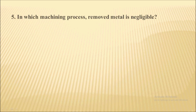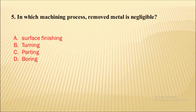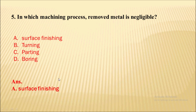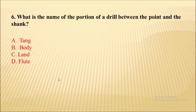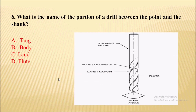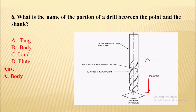In which machining process is the removal of metal negligible? That would be a surface finishing process. Next: what is the name of the portion of a drill between the point and the shank? This is the point, and this is the shank — the body portion in between is called the body. Correct option is B.